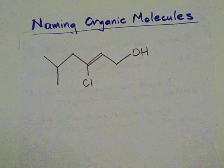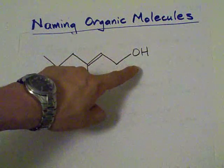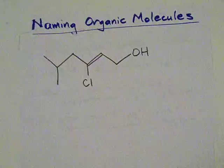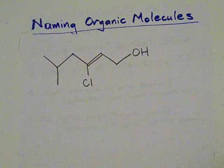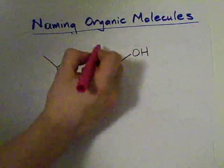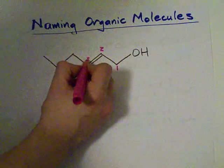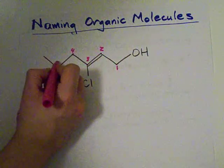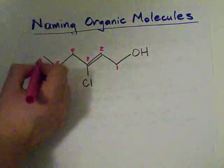Let's do it for this one first. The main thing here is the alcohol. What's the longest carbon chain that contains the alcohol? Well, this is carbon one, carbon two, carbon three, carbon four, carbon five, and I can go either way here.